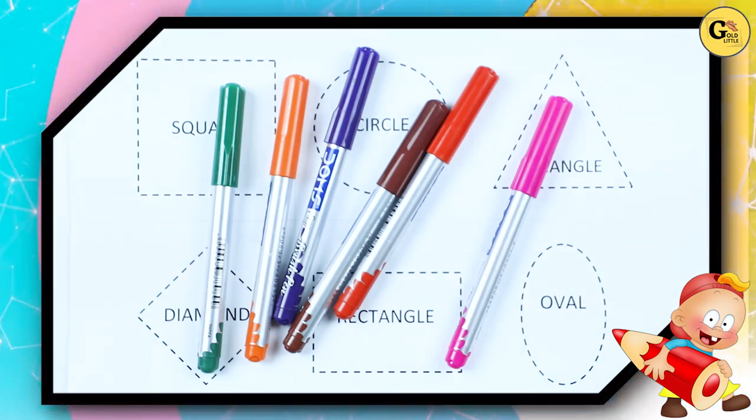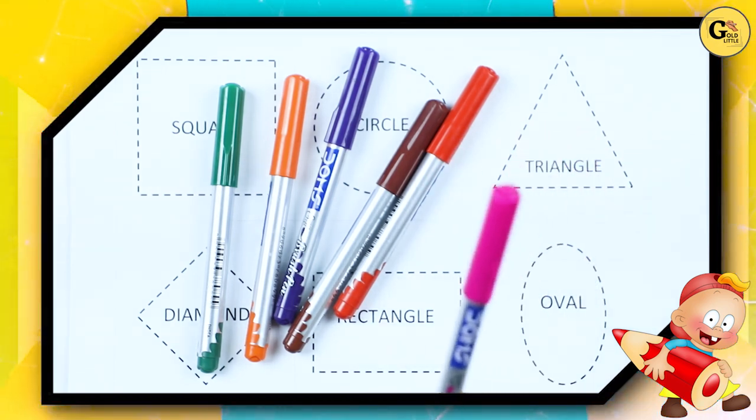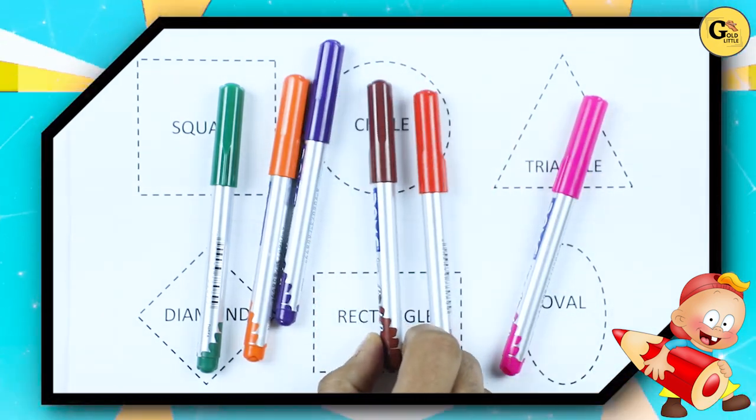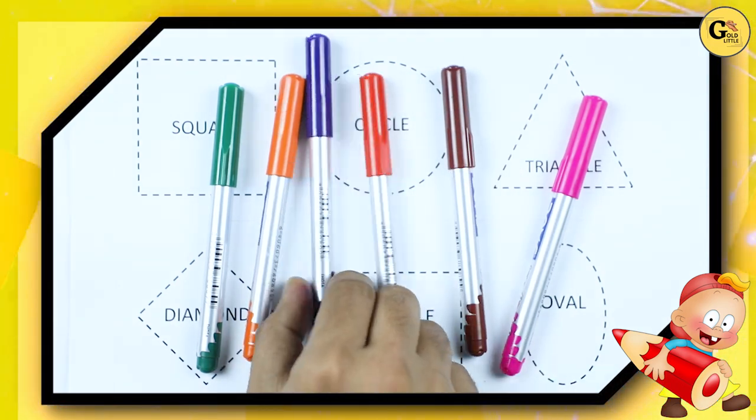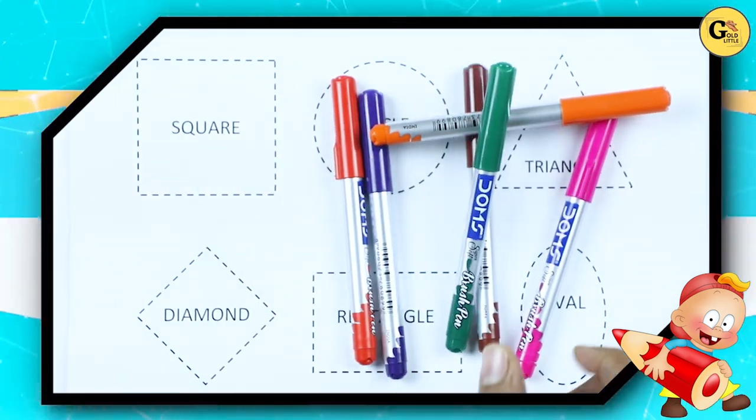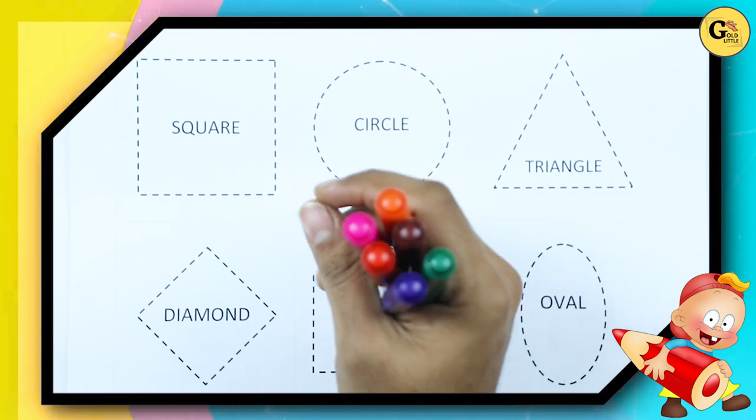We learn shapes with some colors. Pink color, red color, brown color, purple color, orange color, green color. So let's start, learn shapes.